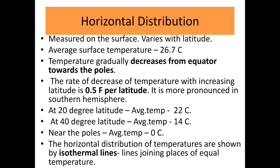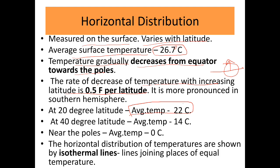Horizontal distribution of temperature is measured on the surface and varies with latitude. The average surface temperature is around 27.7 degrees Celsius. Temperature gradually decreases from the equator towards the poles. The rate of decrease of temperature with increasing latitude is 0.5 degrees Fahrenheit per latitude, and it is more pronounced in the Southern Hemisphere. At 20 degrees latitude the average temperature is 22 degrees Celsius, at 40 degrees latitude it is 14 degrees Celsius, and near the poles the average temperature is 0 degrees Celsius. Horizontal distribution of temperatures is shown by isothermal lines — lines joining places of equal temperature.